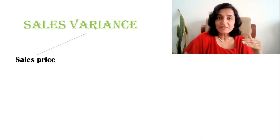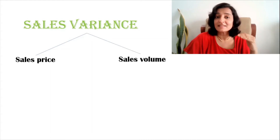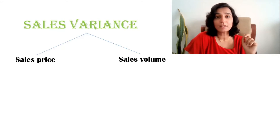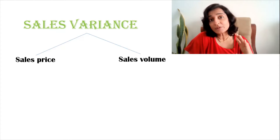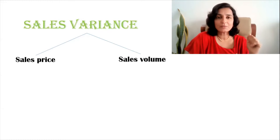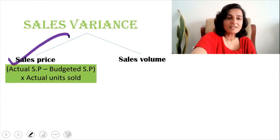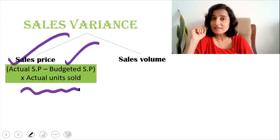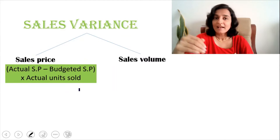The sales price variance formula tries to find out whether there is any difference between the actual price and the budgeted price. The formula is: actual selling price minus budgeted selling price, multiplied by actual units sold.